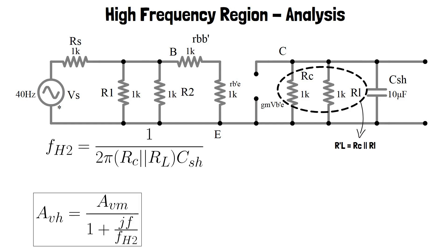And if we try to solve the voltage gain and simplify it we get the final equation as AVH equals AVM by 1 plus JF by FH. So we get the graph as shown.